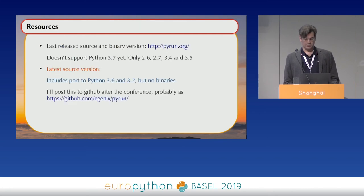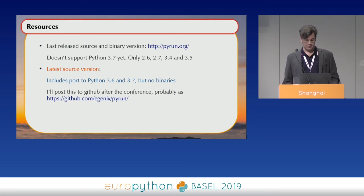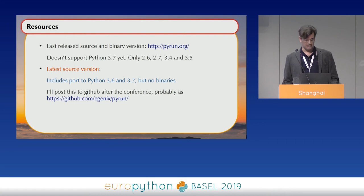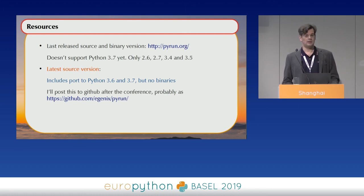This is where you can get PyRun. The released source and binary versions are a bit older — they only support 3.5 as the latest version and 2.7. What I will do is put the current working version up on GitHub so you can download the sources and compile it yourself. Compiling it yourself is pretty easy — the package comes with a make file and some documentation. You just run 'make distribution' and you're done. You can then pick up the release package from the distribution directory and use that.